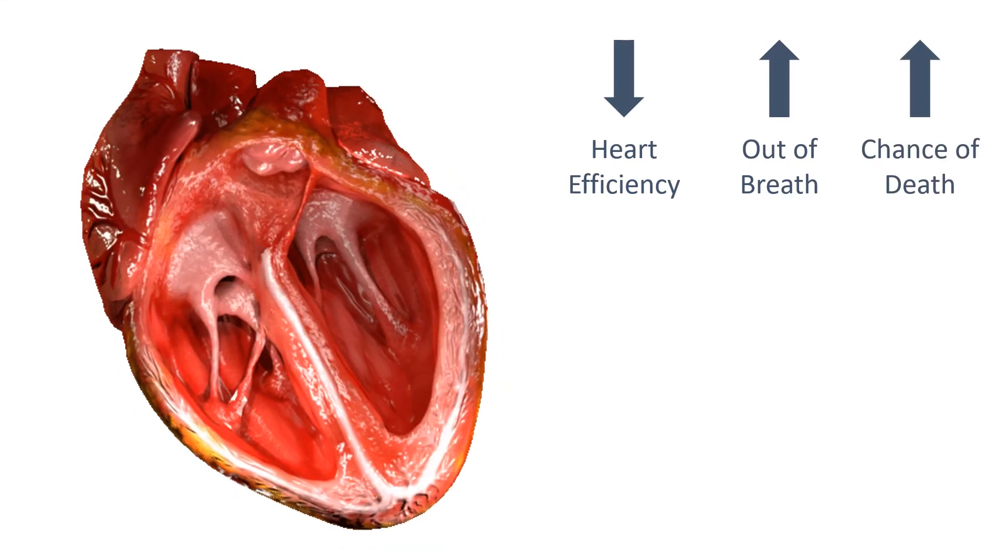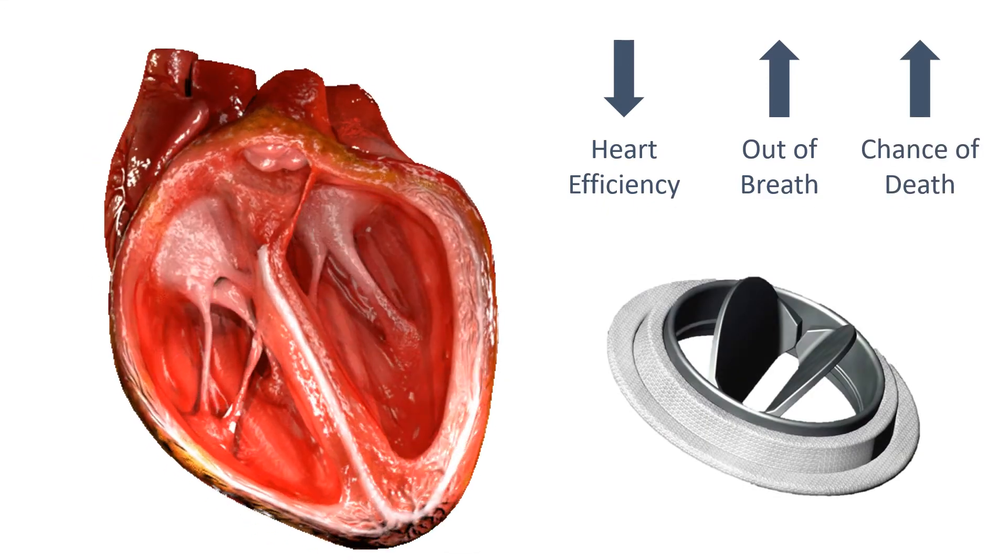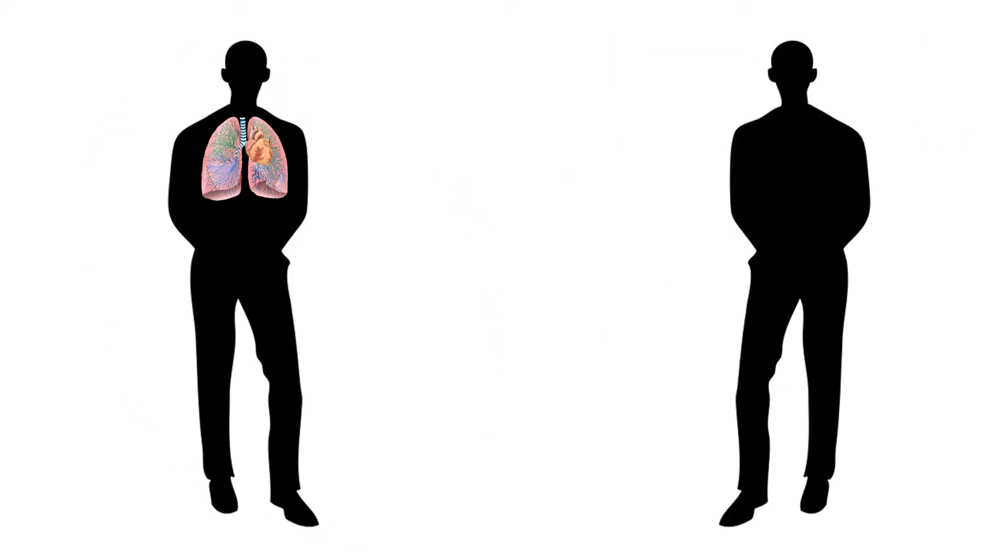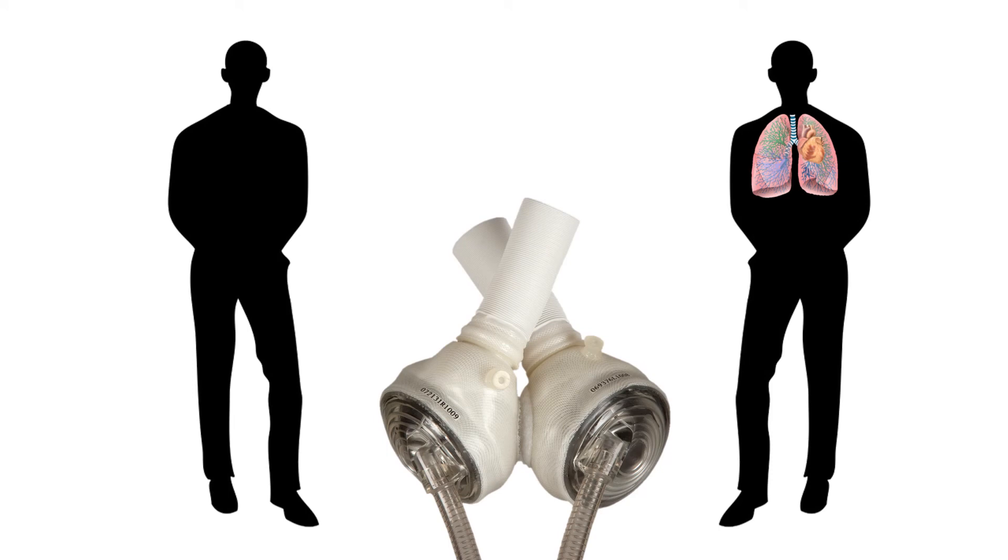Faulty heart valves can be replaced using biological or mechanical valves. If there's total heart failure, then a donor heart or heart and lungs can be transplanted. Artificial hearts are occasionally used to keep patients alive whilst waiting for a heart transplant or to allow the heart to rest as an aid to recovery.